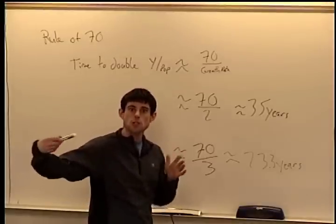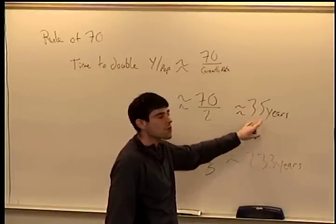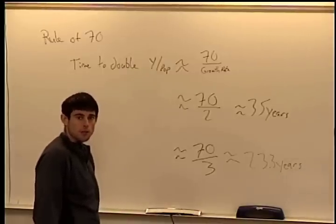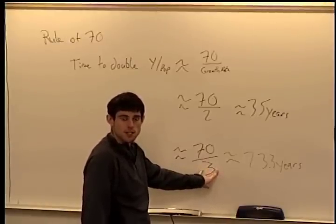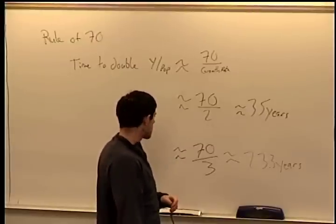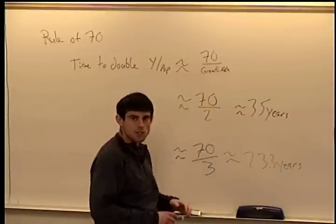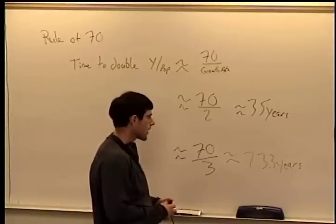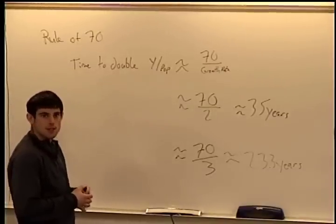This is why we see large differences over 100 years — the economy doubling every 23.3 years instead of every 35 years is a roughly 12-year difference. At 3% growth, every new generation of kids is more than twice as well-off as their parents, whereas at 2% it takes just over a generation to double. Even a small difference between 2% and 3% leads to very big differences.